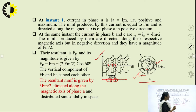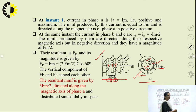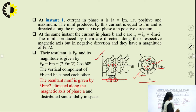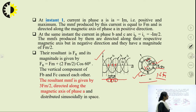At instant 1, the phasor sum of the three MMFs — FA, FB, and FC — comes out to be 3/2 FM, where FM is the peak MMF produced by any individual phase. We can conclude that the resultant MMF has a constant amplitude of 1.5 FM and is directed along the magnetic axis of phase A, which was carrying maximum current at instant 1.